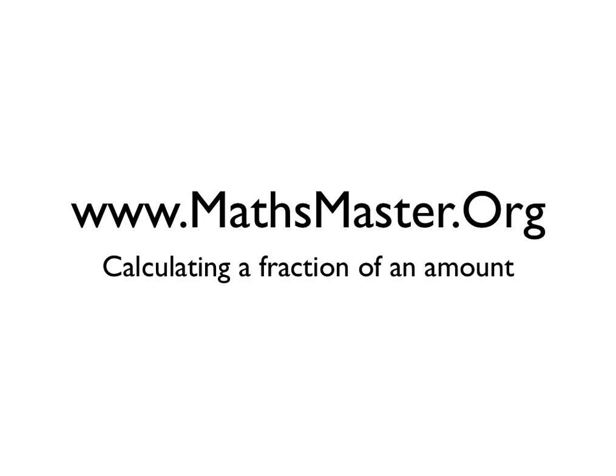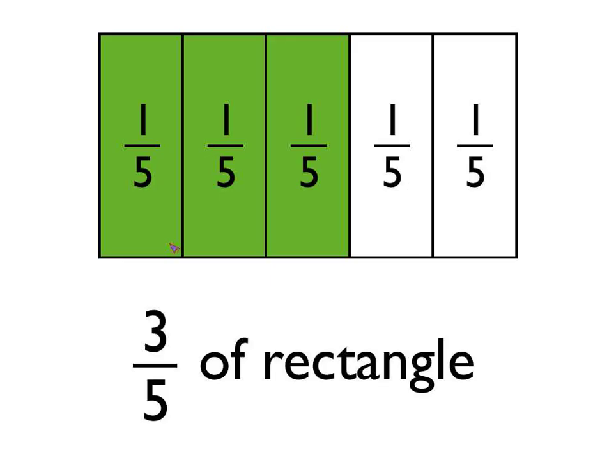Welcome to MathsMaster.org. We're going to have a look at how you calculate a fraction of an amount. Now, we're used to the idea of being able to calculate the fraction of a shape that is shaded in, or put another way, the proportion of this shape that is shaded in, and giving that as a fraction. So, in the case of this rectangle, we can see that three-fifths of it is shaded in green.